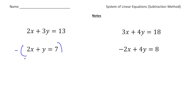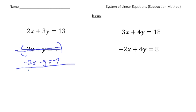When I do that, it turns the 2x into a negative 2x, and it changes the y into a negative y, and it changes the 7 into a negative 7. Now we're going to add these together. 2x and negative 2x — the x terms cancel out. 3y and negative y gives you 2y, and that's going to equal 13 and negative 7 gives you 6.